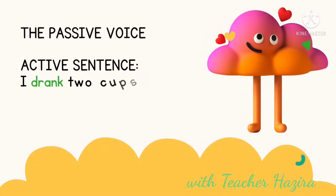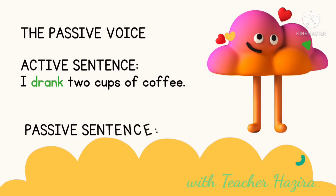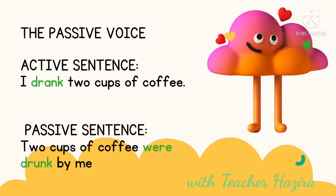As you can see from the screen, I would love to refresh the simple sentences written in active and passive voice. For example, in an active sentence: 'I drank two cups of coffee.' In this sentence, 'I' is the subject, 'drank' is the verb, and the object is 'two cups of coffee.'